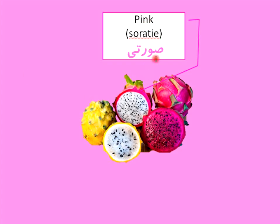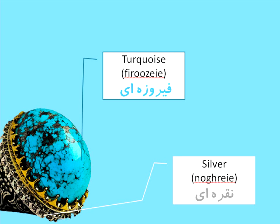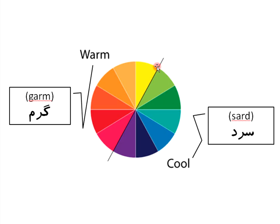Pink is surati. Turquoise is firuze. It's very popular here because it's such a Persian color. And silver is nukri.